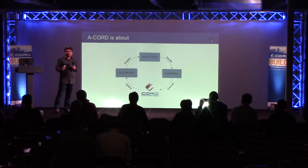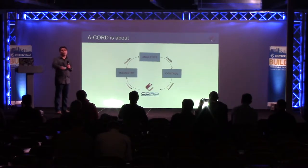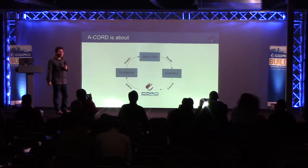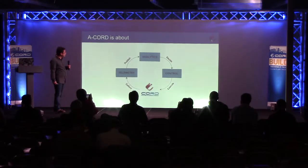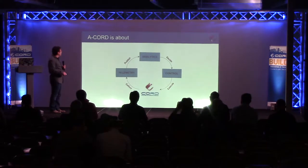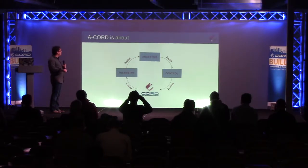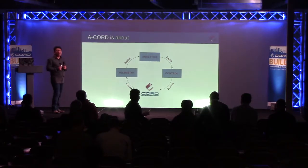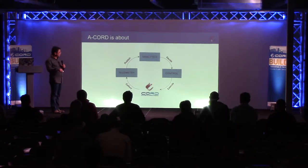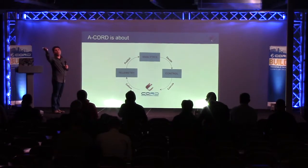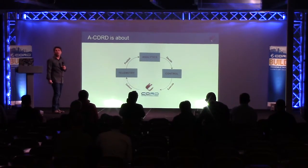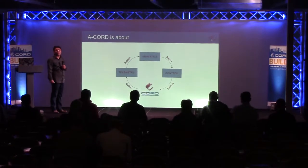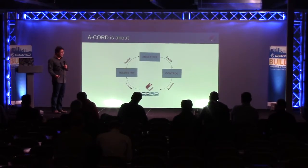ACORD sits at the heart of a closed loop cycle formed of three main functionalities. First, the telemetry component, which is the collector for data — it's the heart of ACORD. It collects data from the CORD environment and publishes it towards its southbound interfaces for applications that want to use that data in their scenarios.